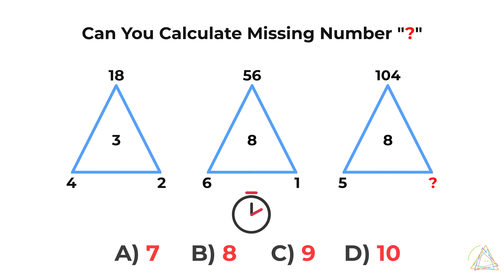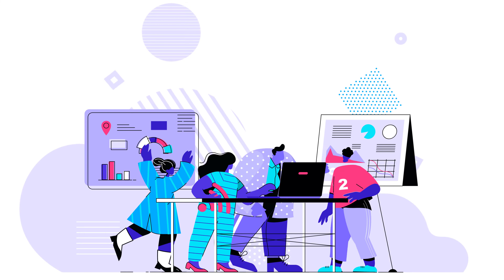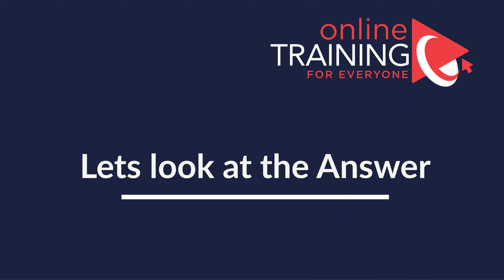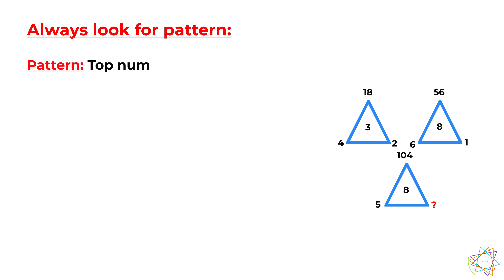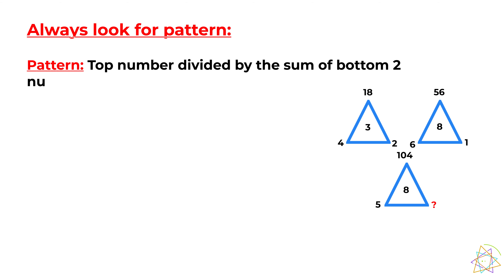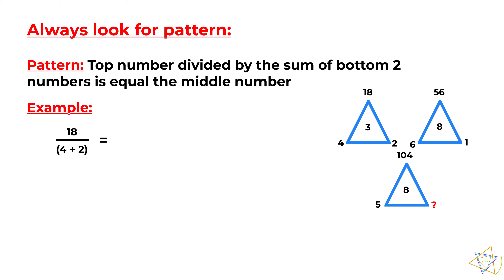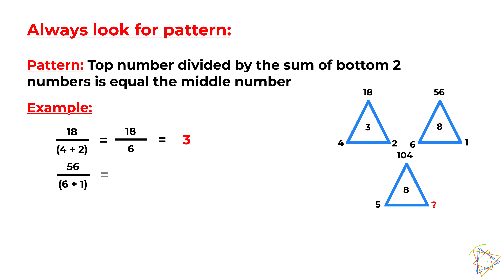Always look for patterns. The pattern here is that the top number divided by the sum of the two bottom numbers equals the middle number. For example: 18 ÷ (4 + 2) = 18 ÷ 6 = 3. And 56 ÷ (6 + 1) = 56 ÷ 7 = 8.